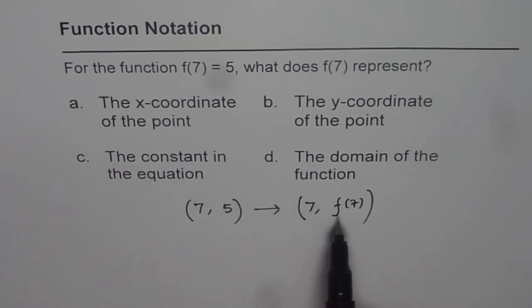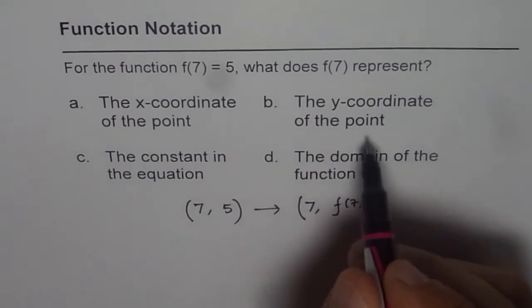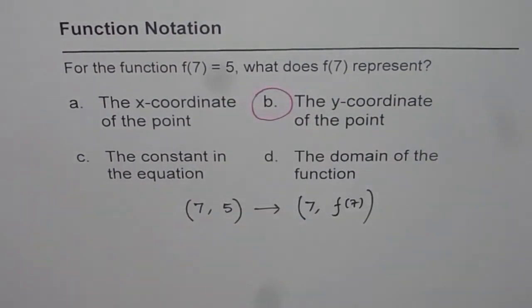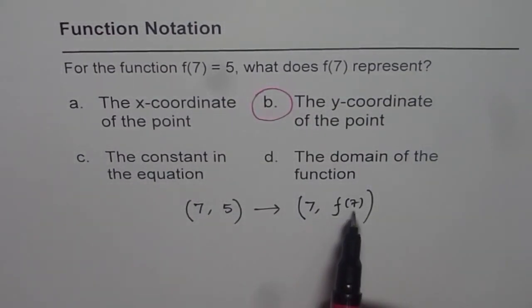f of 7, I should say, represents the y coordinate of the point. So the option b is the correct option. f of 7 represents the y coordinate of the point, right?